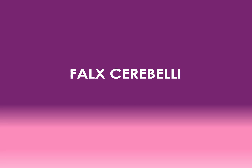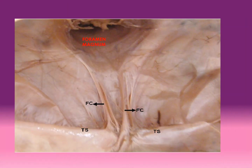The farc cerebelli is a sickle shaped fold which projects into the posterior cerebellar notch. The base of the farc cerebelli is attached to the inferior surface of the tentorium cerebelli in the median plane. Its apex divides into two and is lost along the margins of the foramen magnum. The posterior margin is attached to the internal occipital crest and encloses the occipital sinus. The anterior margin is concave and free.